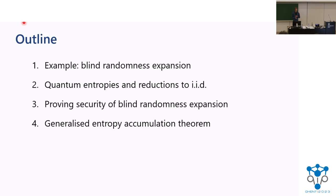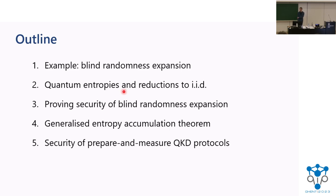One thing I want to stress is that blind randomness expansion currently is something we only know how to prove using this generalized entropy accumulation. But it's really not the main point — I'm just using this as a running example here for concreteness. We also do one other application in the paper, which is maybe a bit more practical, which is prepare-measure QKD. I'll mention this a little bit towards the end.